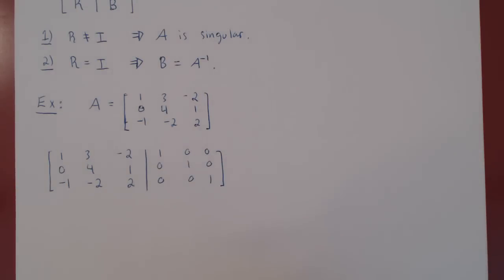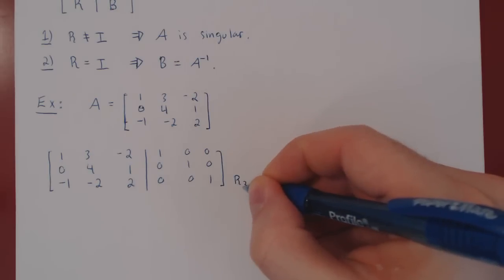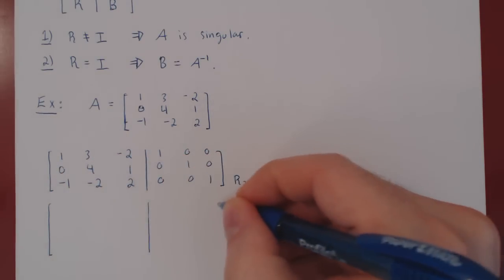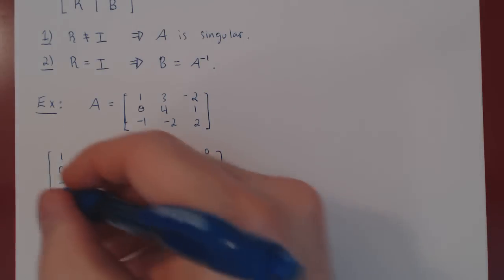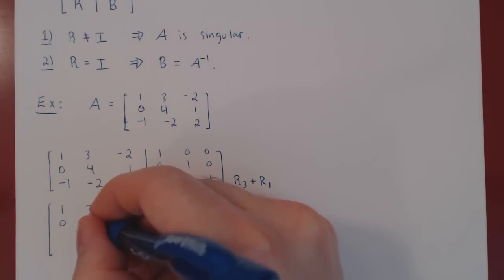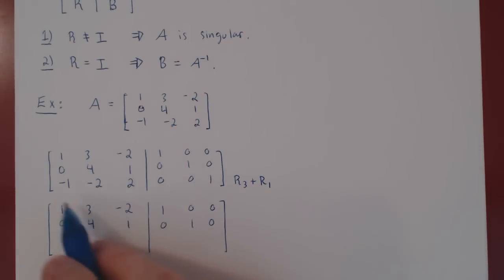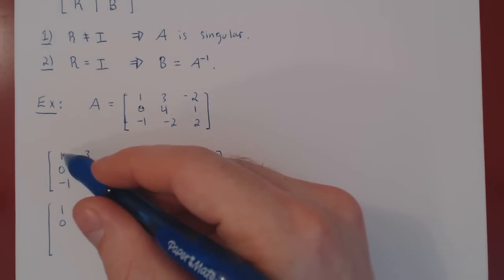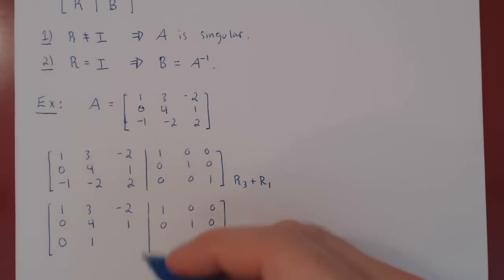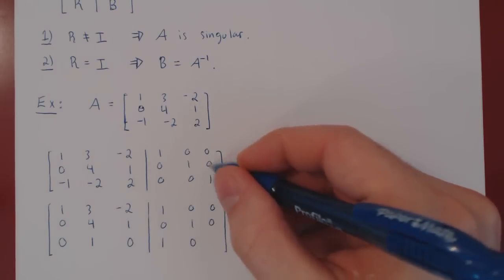We simply row reduce A to its reduced row echelon form. The first operation: row 3 plus row 1. We are only changing the third row, so we recopy the first and second rows. Applying this operation to the entire augmented row gives: -1+1=0, -2+3=1, 2+(-2)=0, 0+1=1, 0+0=0, 1+0=1.